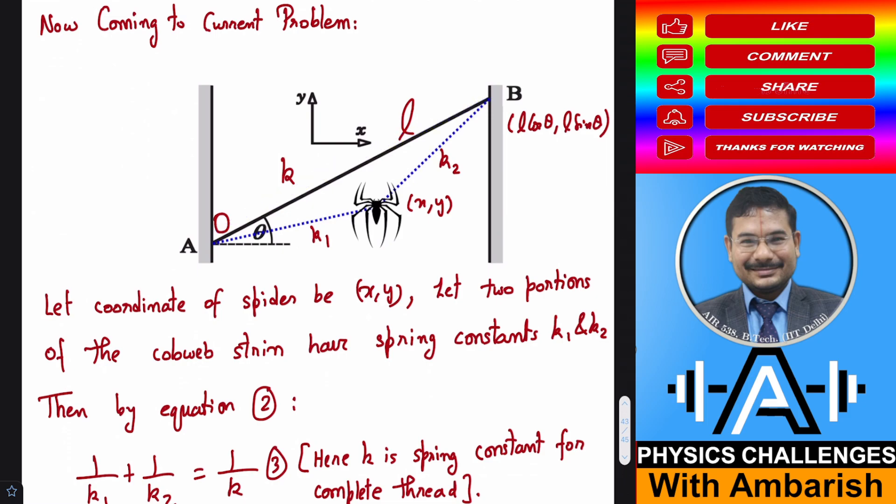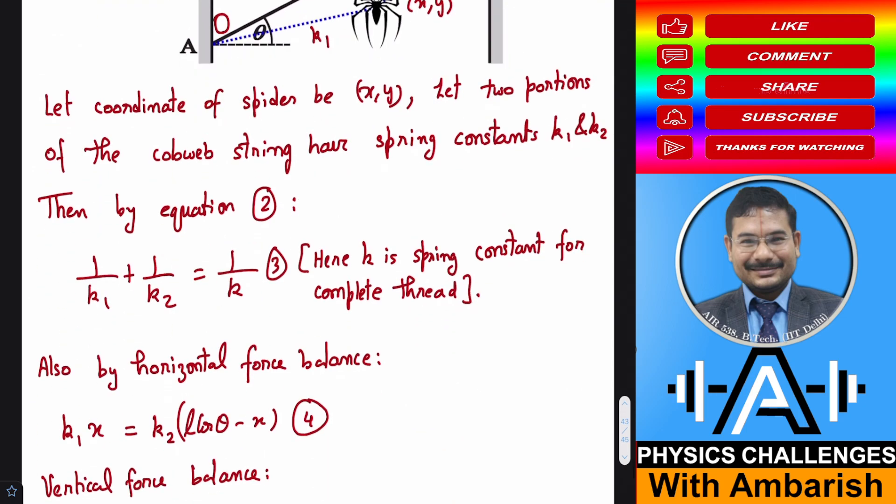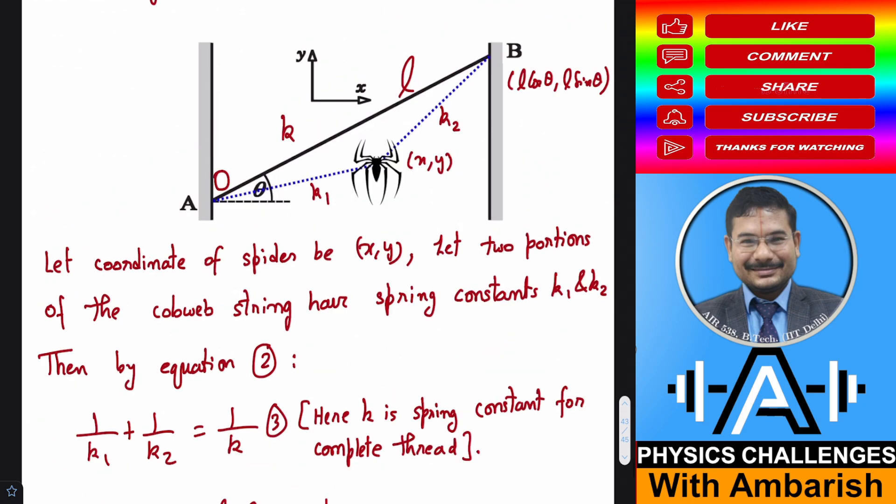Even though they are point springs, they can be treated as two smaller point springs connected in series. Let the coordinate of the spider be X comma Y. Let the two portions of the cobweb string have spring constants K1 and K2. Then by equation 2, that is 1 by K equals 1 by K1 plus 1 by K2, we can see that this equation also holds for the point springs because they are connected in series. Here K is the spring constant for the complete thread.